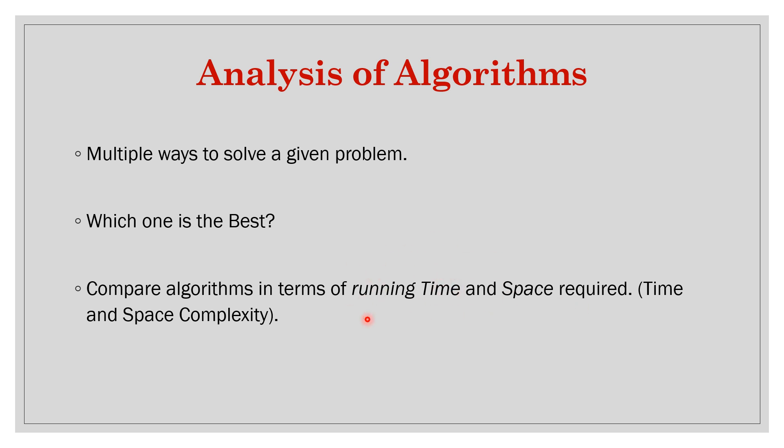That's why we have to compare in terms of running time and space required — this is called time and space complexity analysis. The question is how do we measure running time? If we run the same algorithm on different machines, the time will vary, and even on the same machine it varies depending on load. So we need a theoretical way of measuring how good an algorithm is, independent of the machine, its load, or the programming language.